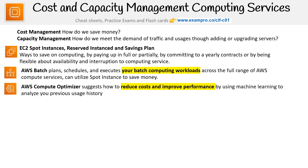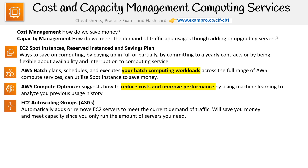We have AWS Compute Optimizer, which suggests how to reduce costs and improve performance by using machine learning to analyze your previous usage history. We also have EC2 Auto Scaling Groups — ASGs — which automatically add or remove EC2 servers to meet the current demand of traffic. They save you money and meet capacity since you only run the amount of servers you need.